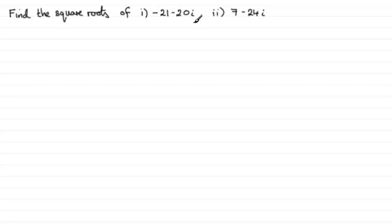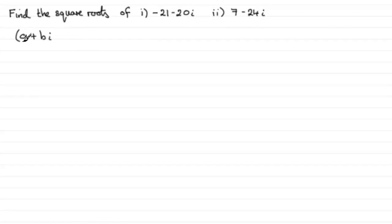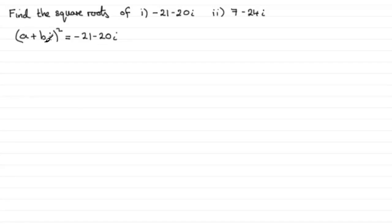Let's start with the square root of minus 21 minus 20i. For questions like this, what we normally do is let the square root of minus 21 minus 20i be something of the form a plus bi. So a plus bi equals the square root of minus 21 minus 20i, and if we square both sides that squared must equal minus 21 minus 20i. We'll expand this bracket, compare the real and imaginary parts, create two simultaneous equations, and solve for a and b.